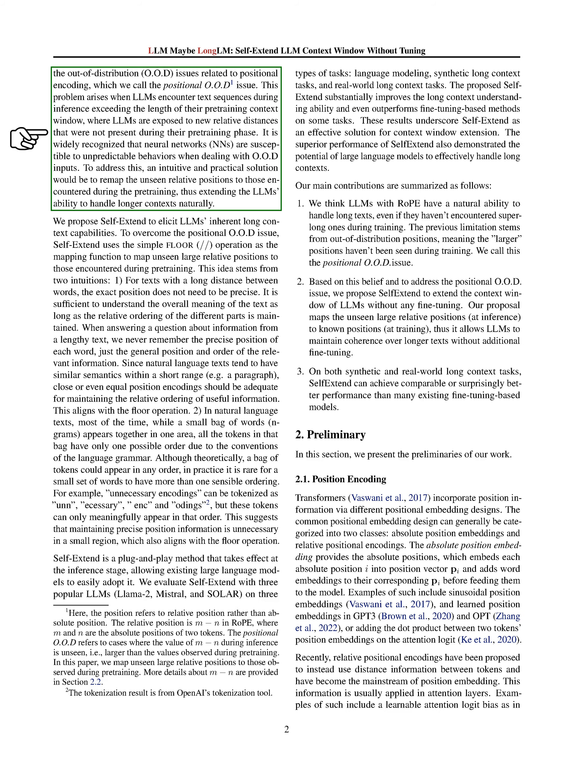This issue arises when LLMs encounter text sequences during inference that are longer than their pre-training context window. In such cases, LLMs are exposed to new relative distances that they didn't encounter during pre-training. Neural networks are known to behave unpredictably when dealing with OOD inputs. To address this, we propose a solution called Self-Extend, which aims to bring out the inherent long-context capabilities of LLMs.